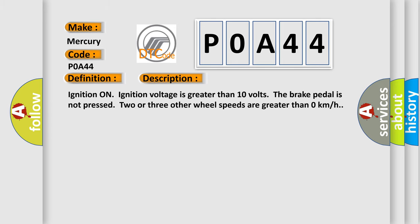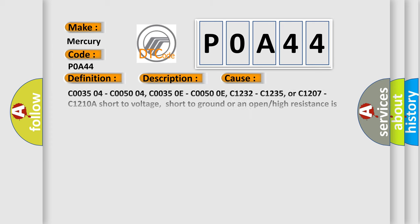And now this is a short description of this DTC code. Ignition on, ignition voltage is greater than 10 volts. The brake pedal is not pressed. Two or three other wheel speeds are greater than zero kilometers per hour. This diagnostic error occurs most often in these cases.